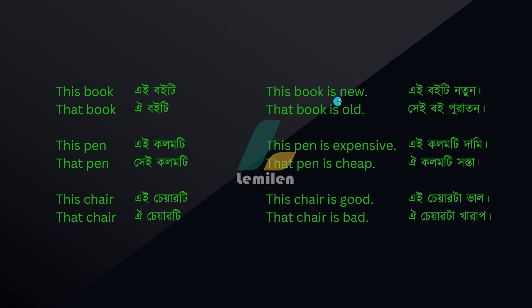This book is — 'A boiti' — new — 'notun.' This book is new: 'A boiti notun.' That book is — 'OI boiti' — old — 'puratan.' That book is old: 'OI boiti puratan' or 'bashe I boiti puratan.'